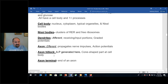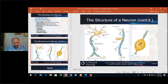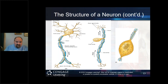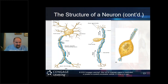The axon hillock is the area where the action potential is generated. It's a cone-shaped part of the cell body — like an upside-down pyramid with the apex at the top. Right at the axon hillock is the initial segment, and then we have the nodes of Ranvier along the axon.